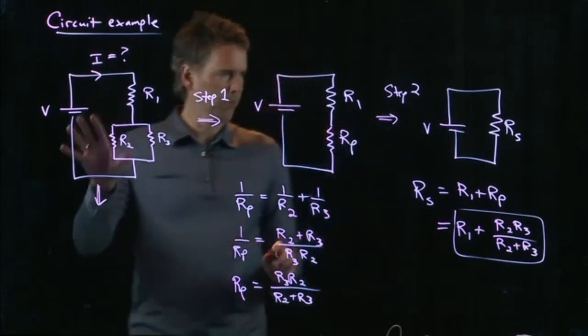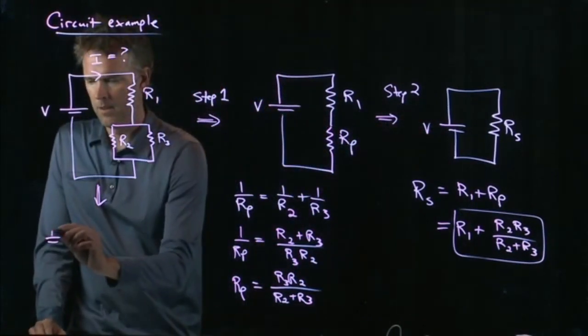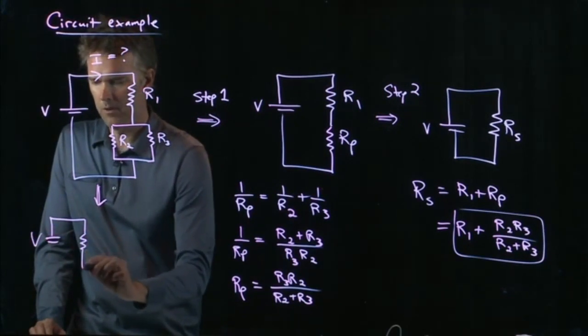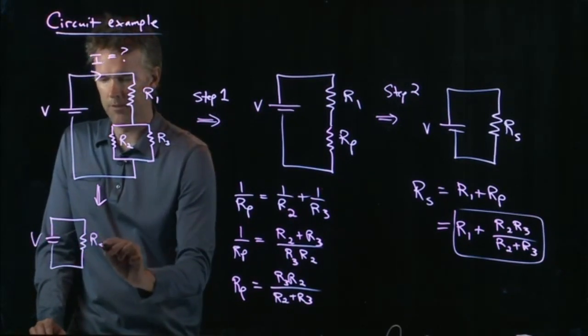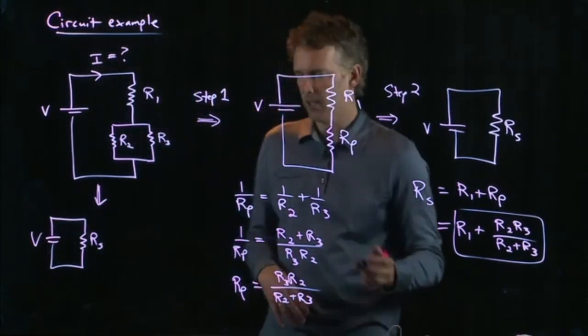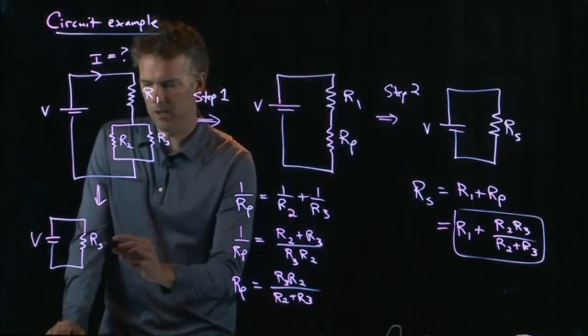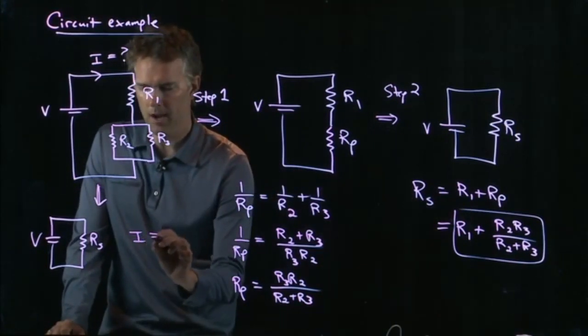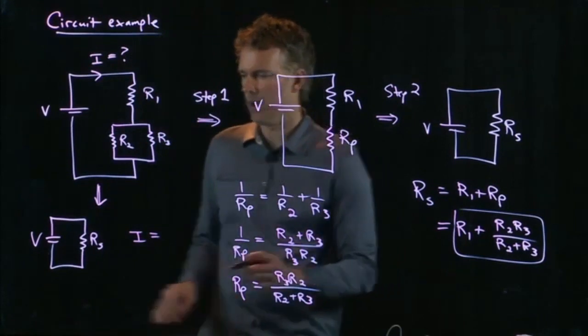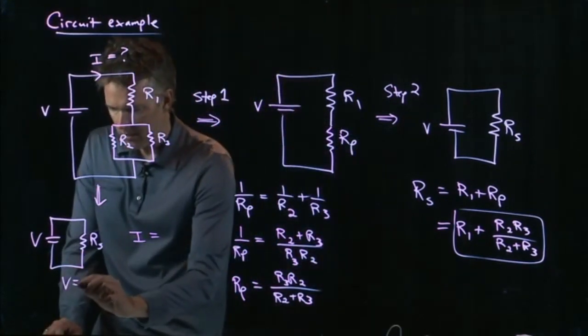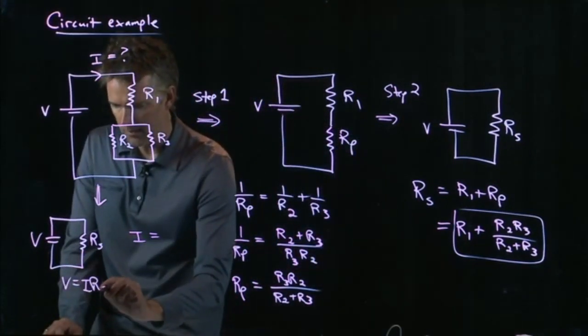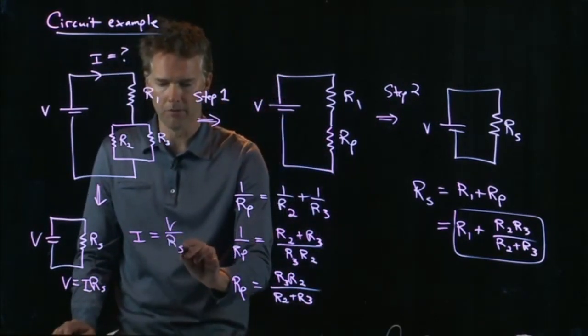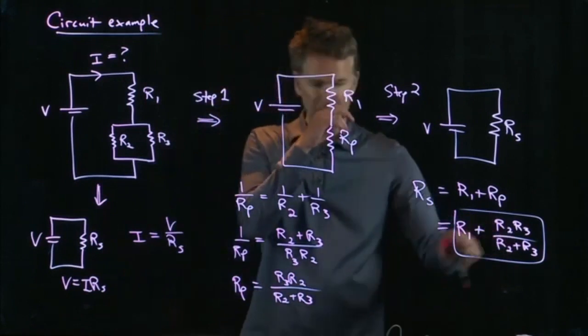So we've simplified the circuit to that. One battery, one resistor, and it has a value of R sub S. And if you're calculating what the resistance is, R sub S, you just punch in some numbers there. If you want to calculate the current now, you can go back to Ohm's Law. If you have a simple circuit, then Ohm's Law applies. And so I is just going to be V divided by R sub S, where this thing is your R sub S.